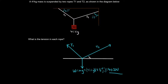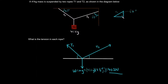Now we want to solve for the angles so the problem becomes easier. To solve for the angle on T2, we can draw a right triangle. We know one angle is 64 degrees from the picture. Since this is a right triangle, one angle is 90 degrees, and a triangle must equal 180 degrees, so the remaining angle must be 26 degrees. So the angle for T2 in our free body diagram is 26 degrees.